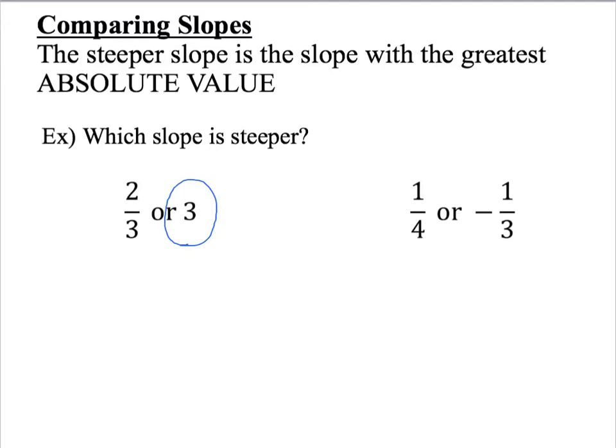Now let's look at the next example, 1 fourth or negative 1 third. Well negative 1 third is not in absolute value form. So if I take the absolute value of negative 1 third, then that would give me positive 1 third. Now I'm going to compare 1 fourth to 1 third. Well we know that 1 fourth is 0.25 and 1 third is 0.333 repeating. So which one would be larger? 1 third. And so the line with the slope of negative 1 third is steeper than the line with slope 1 fourth.